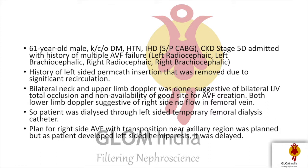This is about a 61-year-old male who is a known case of diabetes and hypertension with history of CABG in the past, currently having chronic kidney disease and on maintenance hemodialysis. This patient had a history of multiple AVF failures, and also had a history of left-sided tunneled catheter insertion which was removed due to significant recirculation. Bilateral neck and upper limb Doppler suggested bilateral IJV total occlusion and non-availability of any good site for AVF creation.